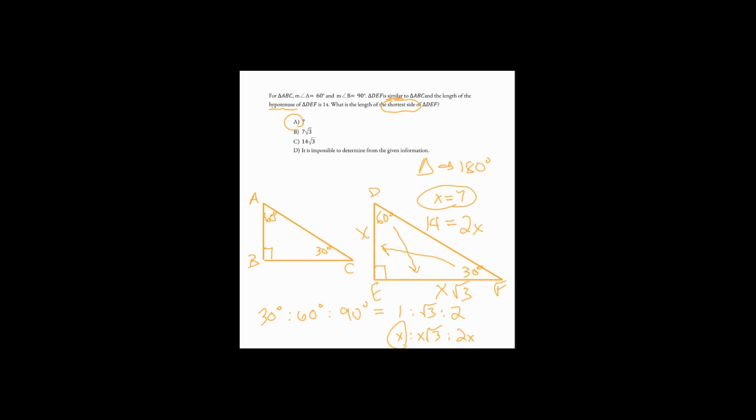The combination of similarity, giving us equal corresponding angles, and the special right triangle of the 30, 60, 90 led us to understand that the length of the shortest side of triangle DEF is 7.